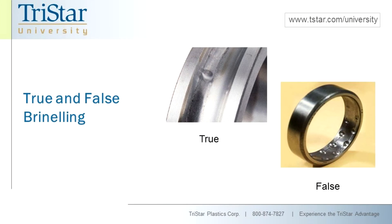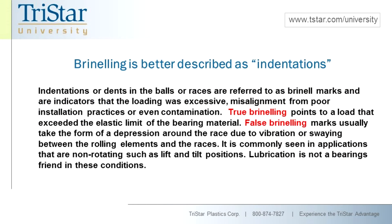There's one more — true and false brinelling. Brinelling refers to little indentations or dents. These are usually indicated in a single row around the race, which is classified as true brinelling. That usually occurs because the elastic limit of the material has been exceeded, and it shows up as little divots, usually in line with where the ball locations are. False brinelling involves little oval-shaped depressions that are usually running axially across the face of the race.